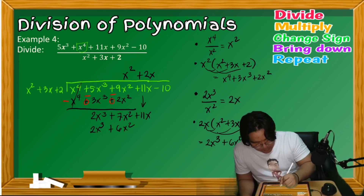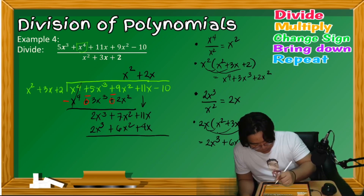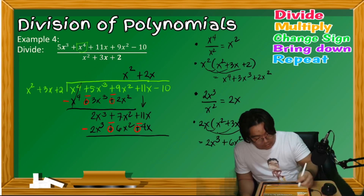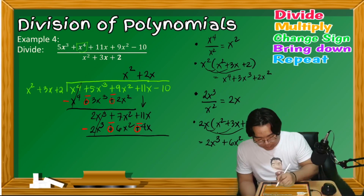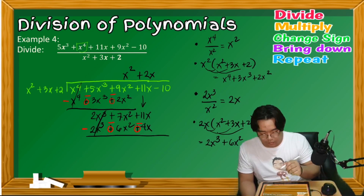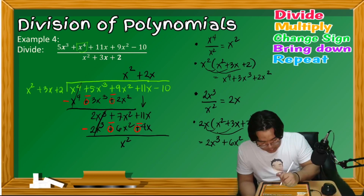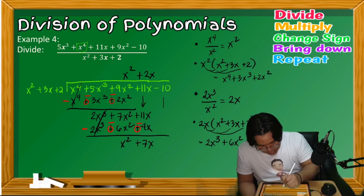Change the signs: positive terms become negative. Adding: 2x³ − 2x³ = 0, 7x² − 6x² = x², and 11x − 4x = 7x. Bring down negative 10.